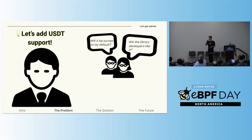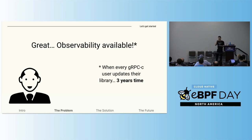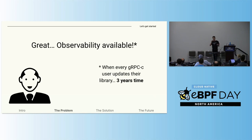Our problem is that the gRPC-C library does not have USDT support. We can add USDT support — after all, this is an open source and community-driven library. Hopefully the library developers will like the idea and allow us to merge this code via a pull request, and hopefully they will deem it important enough to be turned on by default in newer versions. Because when the new version with USDT functions is rolled out and everybody updates — which will take, I'm guessing, about three years — then we can have full observability using USDT uprobes.